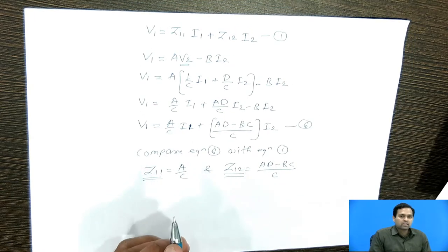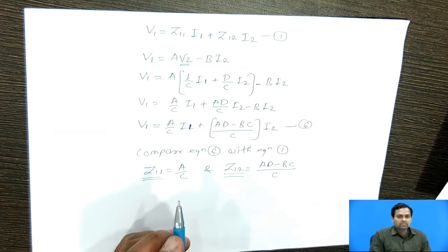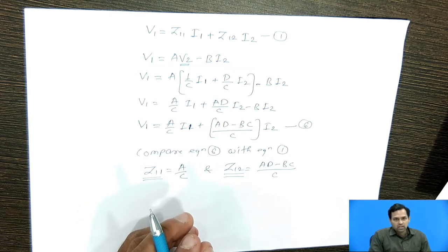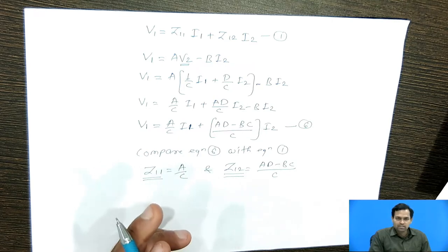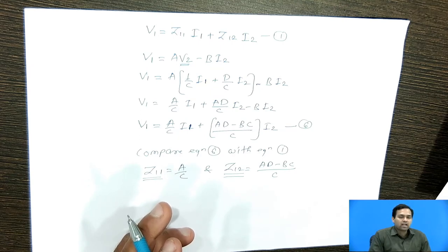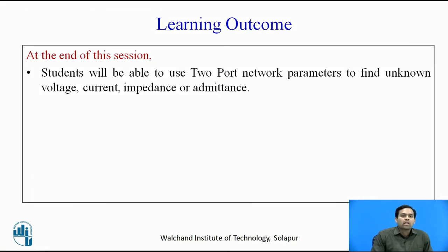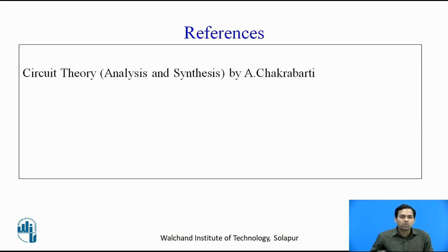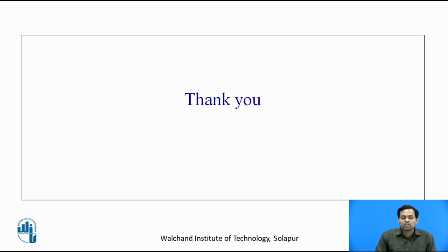So this is the interrelationship between parameters of a two-port network. Similarly, we can write Z11 in terms of H or G parameters, and likewise any two-port network parameter can be represented in terms of other parameters. As a reference for preparing this video lecture, I have used Circuit Theory: Analysis and Synthesis by A. Chakrabarti. Thank you.